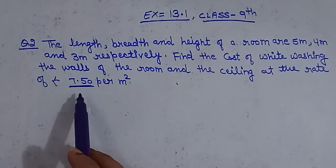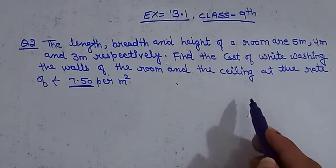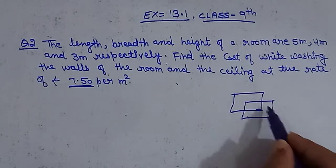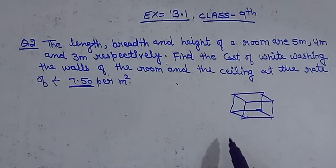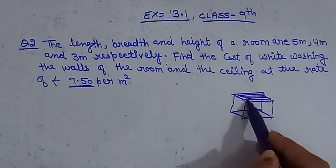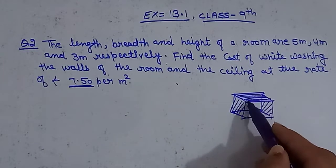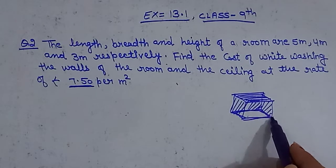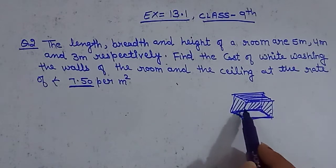First of all, you need to find the area of 4 walls plus ceiling. They have told you that the room is in a cuboid shape. So you have to find the area of the ceiling plus 4 walls, but you don't include the floor. It means you have to find the area of the 4 walls plus ceiling.